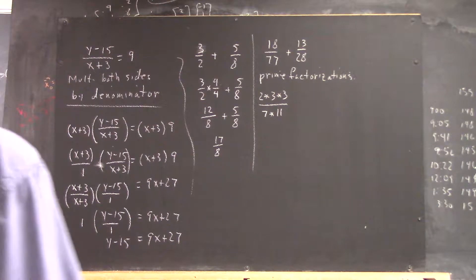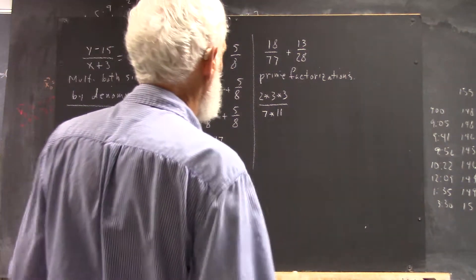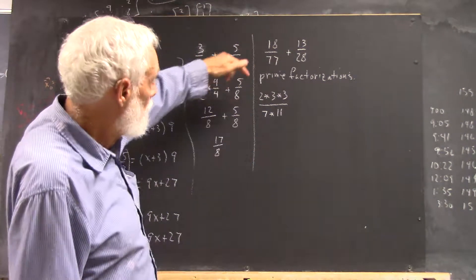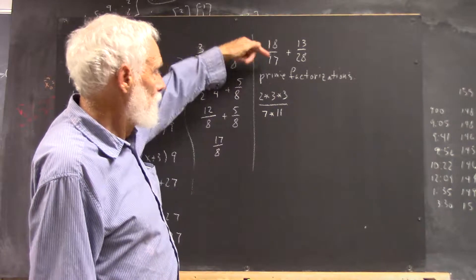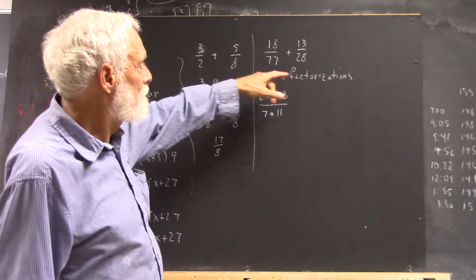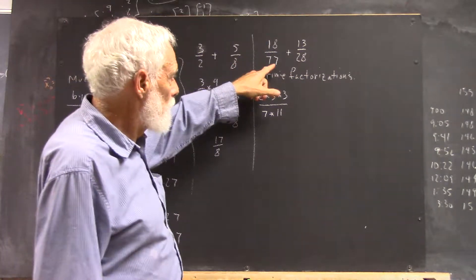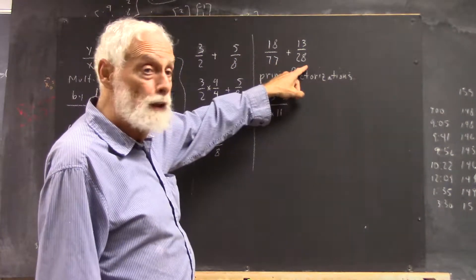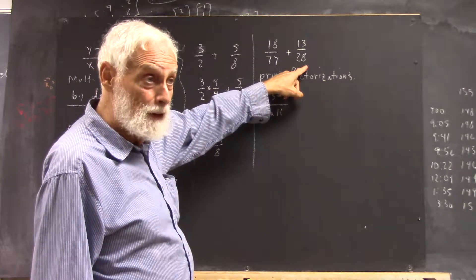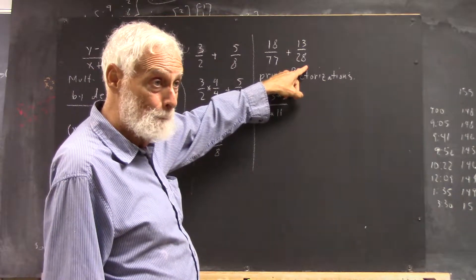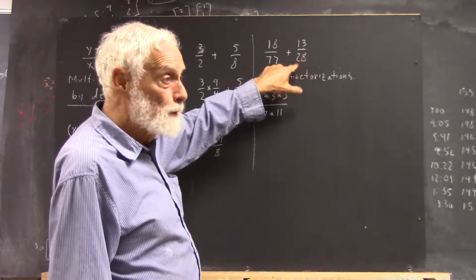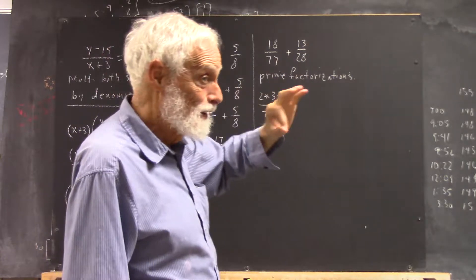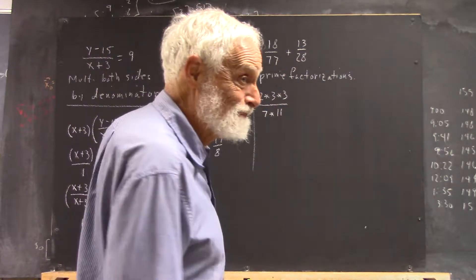We're very good with arithmetic here, because we immediately saw that both of these are divisible by seven. That's pretty good mental arithmetic. We'll see that quickly. So that's a very good sign.